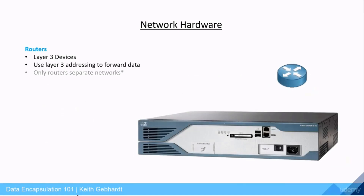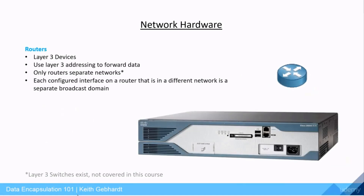Routers are considered our layer 3 devices, which means they use layer 3 addressing to determine where to forward data. For this course, just note that only routers separate networks, and each interface configured to a different network on a router is considered a separate broadcast domain. Every network is a separate broadcast domain, so when we say routers separate broadcast domains or networks, we are essentially speaking about the same thing.